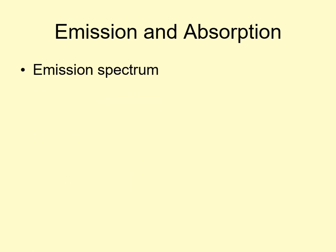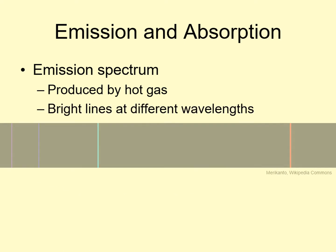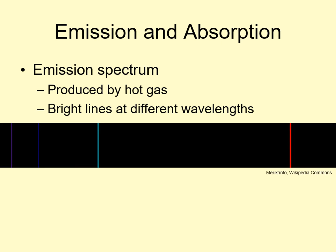Even though thermal radiation is emitted light, it doesn't produce what we call an emission spectrum. Emission spectra are produced when you heat up a thin, transparent gas. The light it produces isn't a continuous rainbow. Instead, it's made up of a discrete set of bright colors called emission lines. There may be just a few lines, or the spectrum may look like a barcode, depending on what gas is emitting the light.